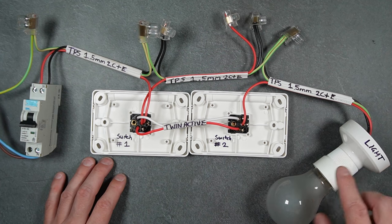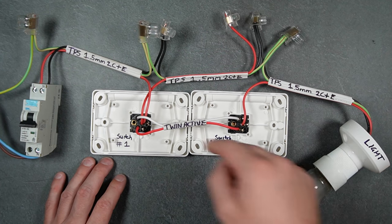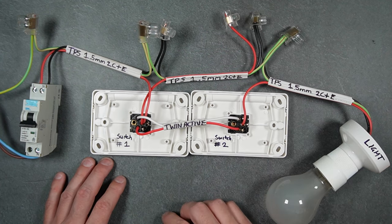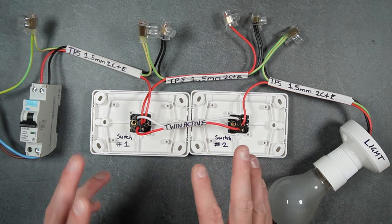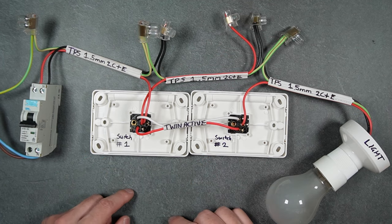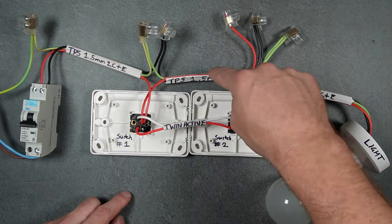got a batten holder and globe, obviously, and the interconnecting cables for the rest of the circuit. This type of installation in Australia and New Zealand will usually consist of two-core and earth,